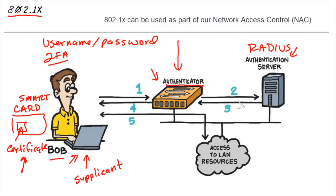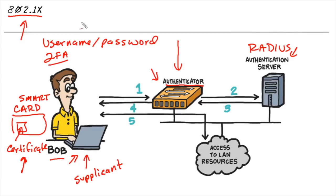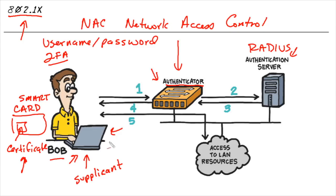And if that all checks out, the authentication server gives the message back — great, let him in — and then Bob has successfully made it past the switch and he's now on the network. This type of technology can be extended further with solutions including NAC, Network Access Control, where the client — Bob in this case — is not only required to authenticate, but we can also profile that computer or device to make sure it's compliant and secure enough to connect to our network. Or, based on who that individual is, once we authenticate him, we might have access control lists that are dynamically placed just for that specific user to control what he's allowed to access.